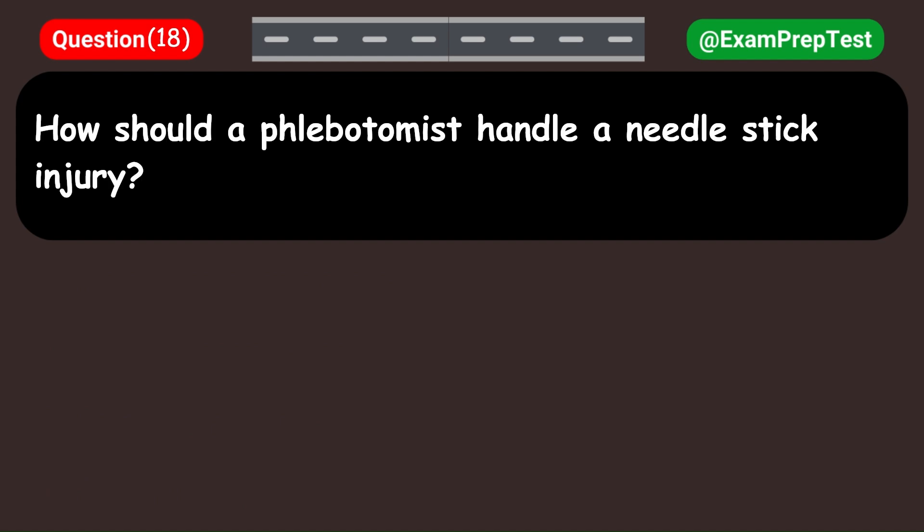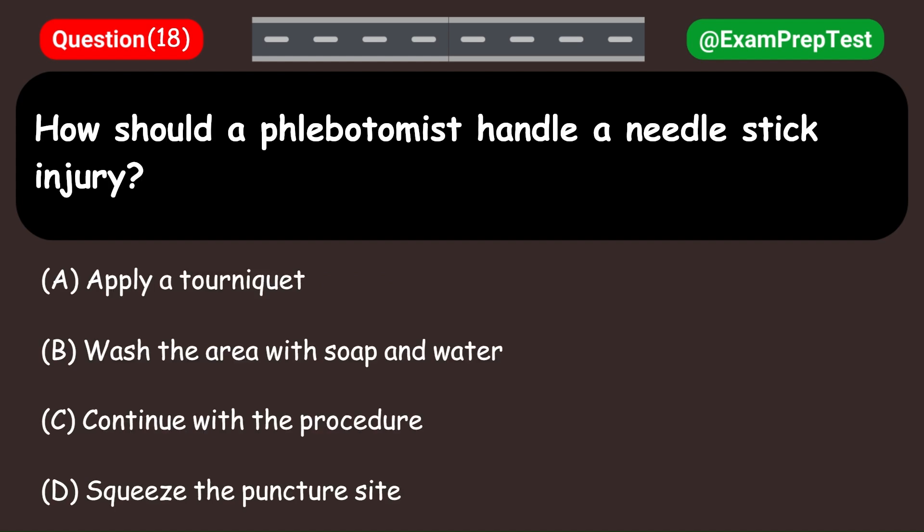How should a phlebotomist handle a needle stick injury? A. Apply a tourniquet. B. Wash the area with soap and water. C. Continue with the procedure. D. Squeeze the puncture site. Answer: B. Wash the area with soap and water.